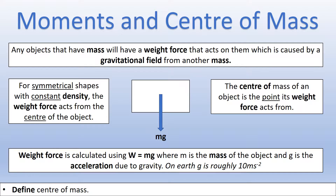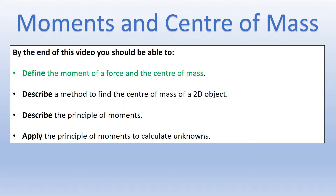Let's now define what we mean by the center of mass. We can calculate the weight force of an object by multiplying the mass by the acceleration due to gravity, using a value typically around 10. This weight force is caused by a gravitational field, most of the time from the Earth. The center of mass of an object is the point from which we model the weight force acting. In simple examples, if an object is symmetrical and has constant density, the weight force acts from exactly the middle of the object. We'll see how to find the center of mass when those two conditions are not true.